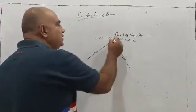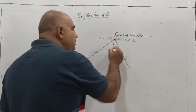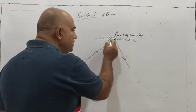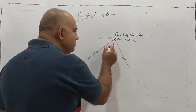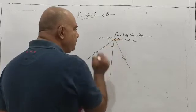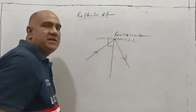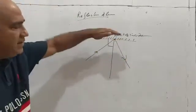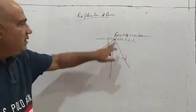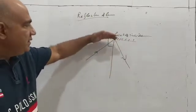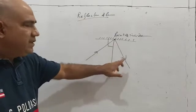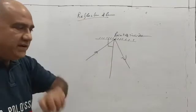Another term is the normal. The normal is perpendicular to the reflecting surface at the point of incidence. So we have defined: normal, point of incidence, reflecting surface, incident ray, and reflected ray.